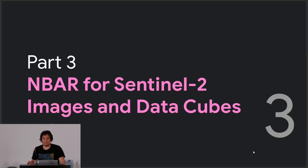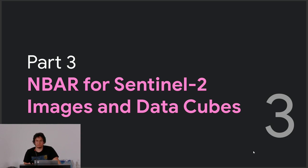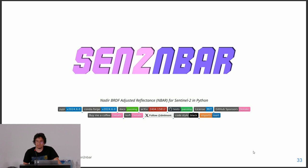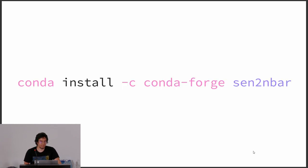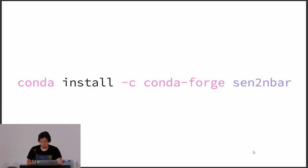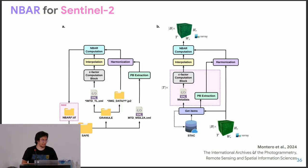That's why we started creating this tool. The tool is called Send2NBAR. It is open source and available on GitHub. If you want to install it, you can just do pip install Send2NBAR. Or if you are using Conda, you can also do conda install from the conda-forge channel. It's also available there. And it works in a very simple way.